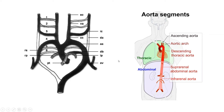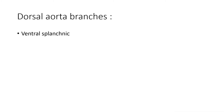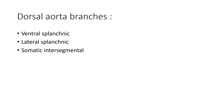The dorsal aorta will give three sets of branches: ventral splanchnic branches which supply the gut and its derivatives; lateral splanchnic branches which supply the intermediate mesoderm; and somatic intersegmental arteries, which are present at each segment — cervical, thoracic, lumbar, sacral, and coccygeal. There will be intersegmental arteries at all these segments.